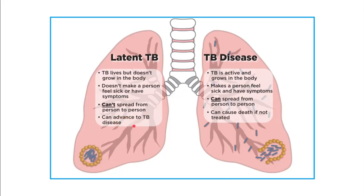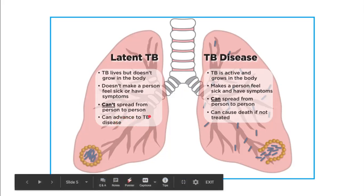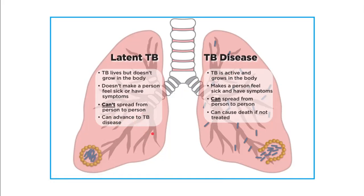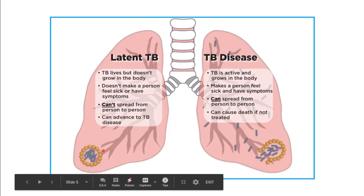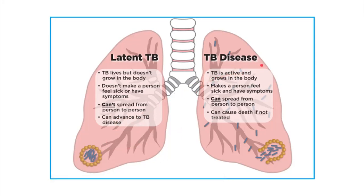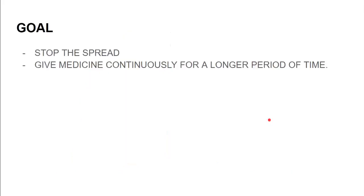Latent TB can advance to active TB when the person's immune system is suppressed — for example, if the person contracts HIV and their immunity is diminished, that is when latent TB converts to active TB. Active TB causes the symptoms already discussed, can spread from person to person, and can cause death if not treated.